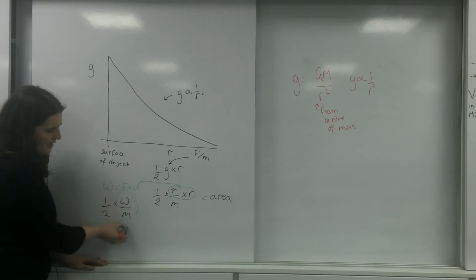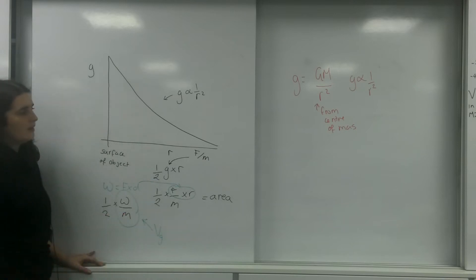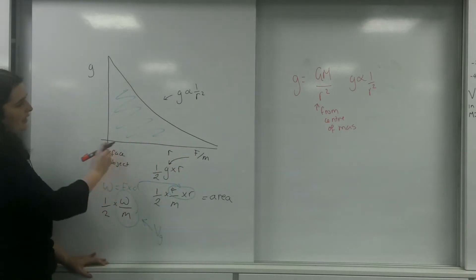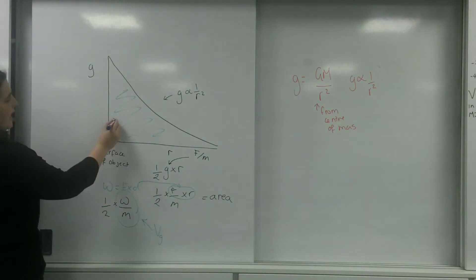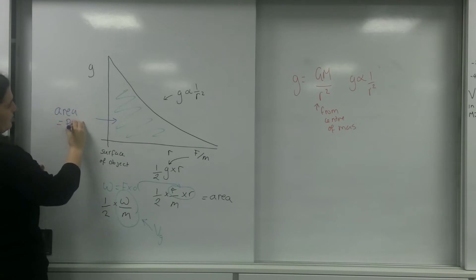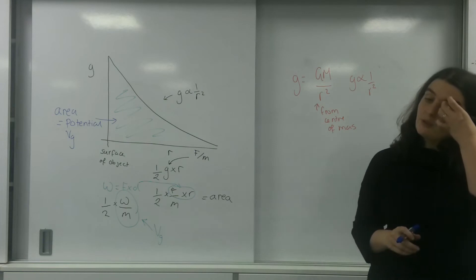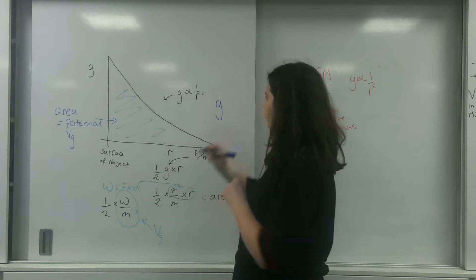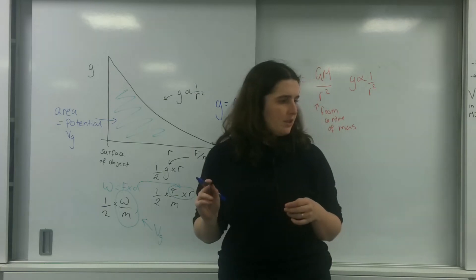Force times any distance is also known as work done. So what I've got here is a half times work done over mass — and that is potential. Which means that the area under the graph of gravitational field strength g versus R equals the gravitational potential V_g. This also explains something you see on your data sheet: the formula that g equals change in V over change in R.